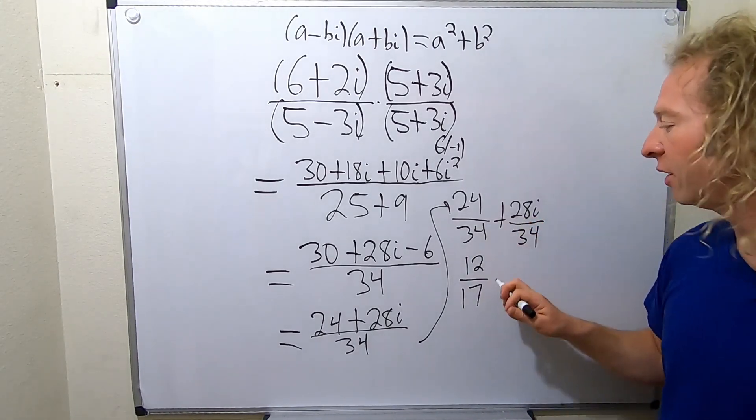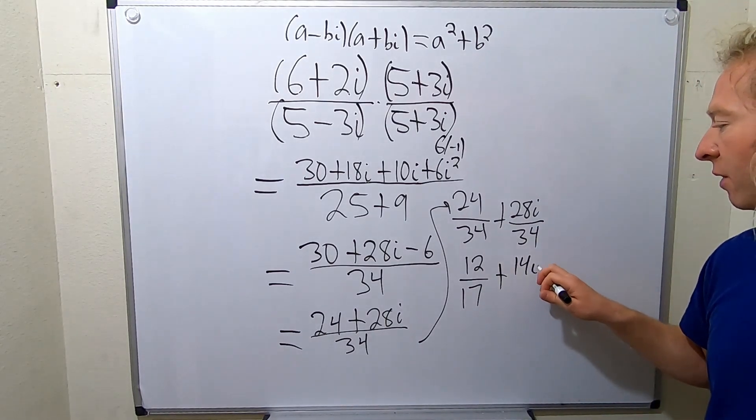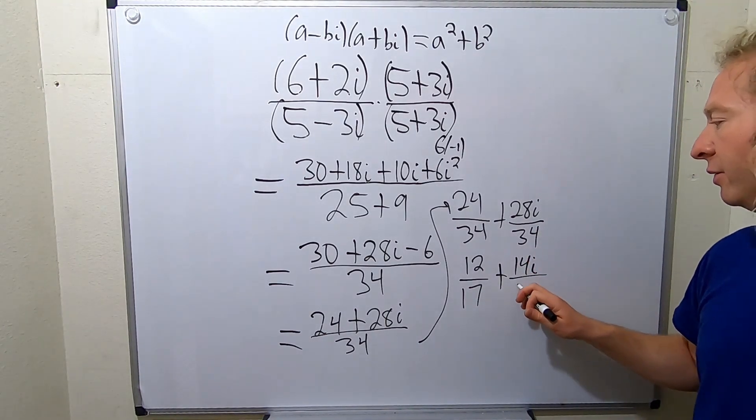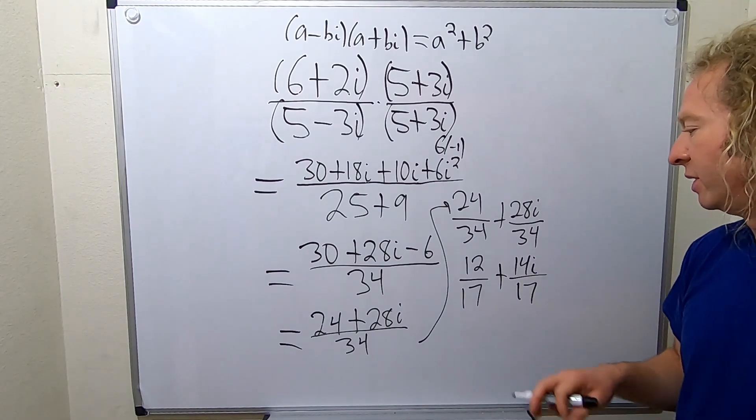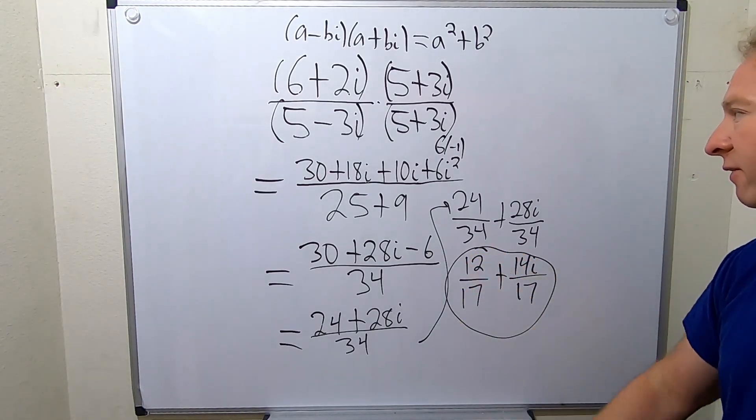Divide this by two, you get 14i. Divide this by two and you get 17. And that is the final answer.